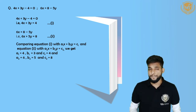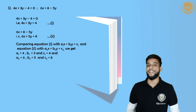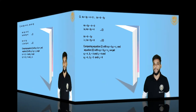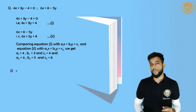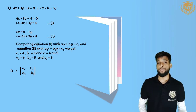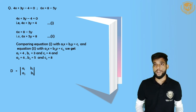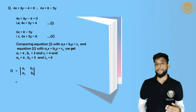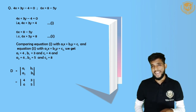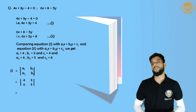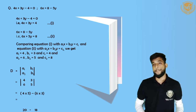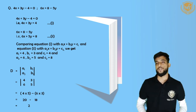Step four: find the values of D, DX and DY. For determinant D: elements A1=4, B1=3, A2=6, B2=5. Calculate: 5 into 4 minus 6 into 3 — that is 20 minus 18 equals 2. The value of determinant D is 2.